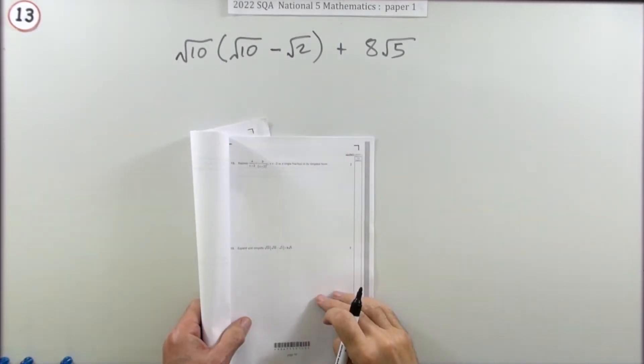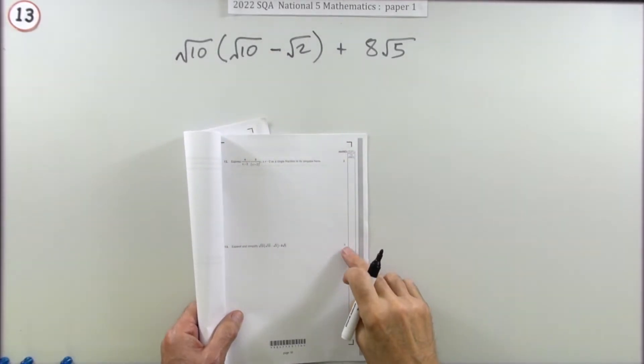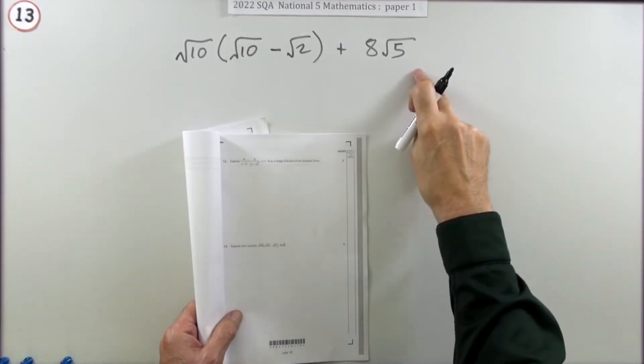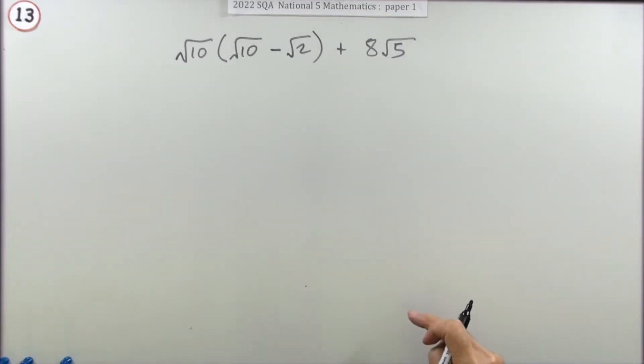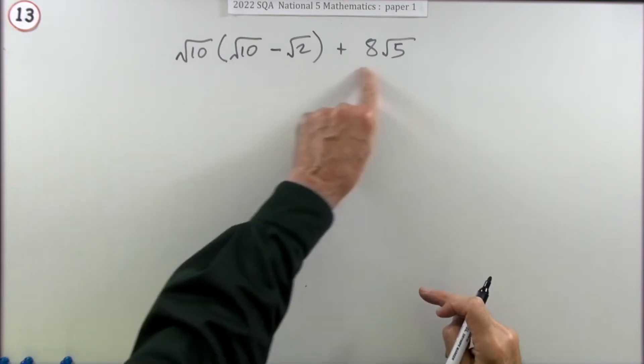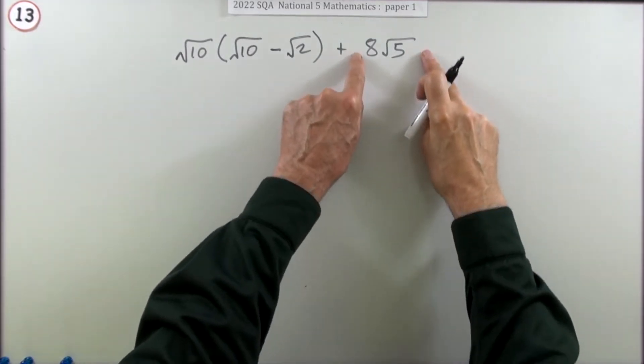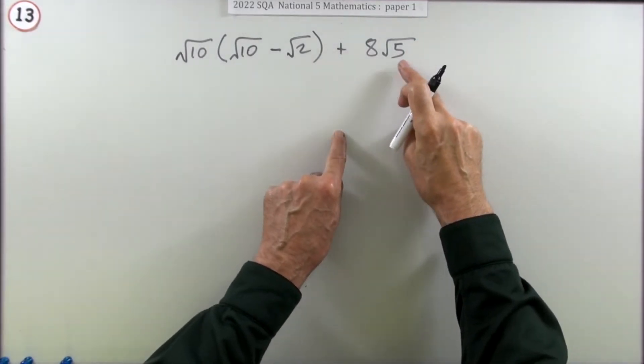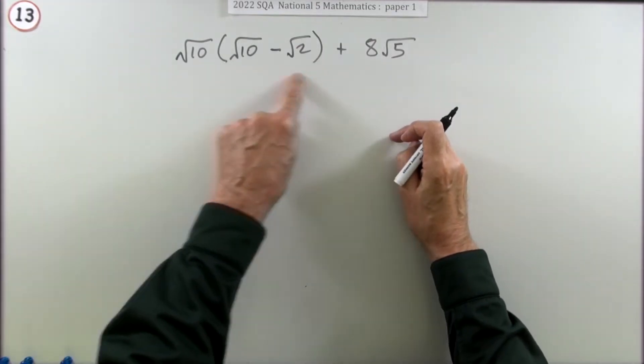Number 13 from the 2022 National 5 Paper 1, a 3 mark question on surds. Soon as you see all these square roots you know it's that surds question where you have to expand and simplify. Well that little lone term at the end, that 8 root 5, you know there's going to be a root 5 lurking in here somewhere that's going to join on to.